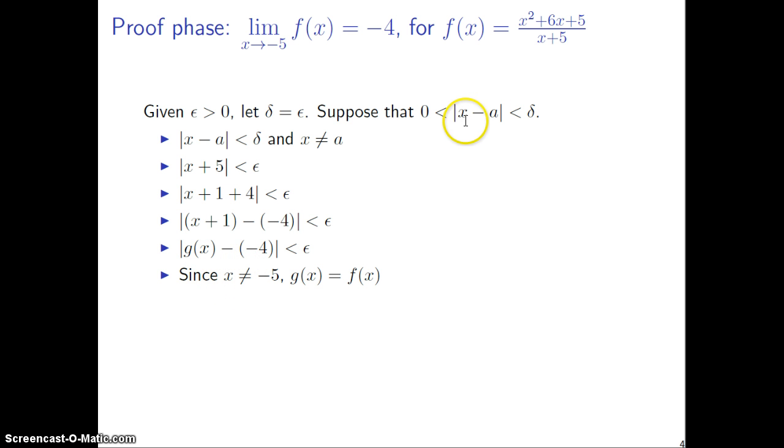x, we said, is not equal to negative 5. And since x is not equal to negative 5, what we did on the first slide was show that then f is equal to g, or g is equal to f, whichever way. But the point is now that x is not equal to negative 5, we can replace g of x with f of x, since these two things are, after all, equal. So we do that. Replace g with f, and then you can replace this negative 4 with capital L. And now you have absolute value f of x minus L is less than epsilon. That's the thing that we wanted to show, so we're done.